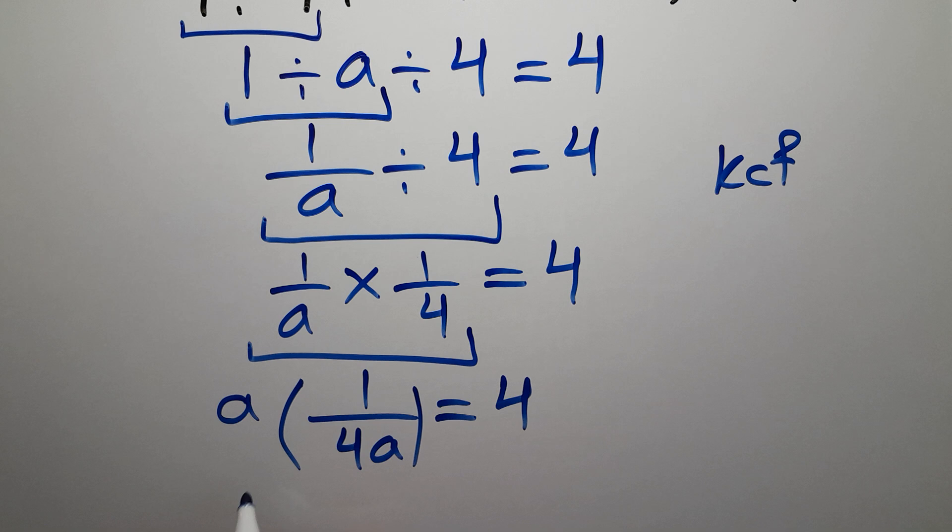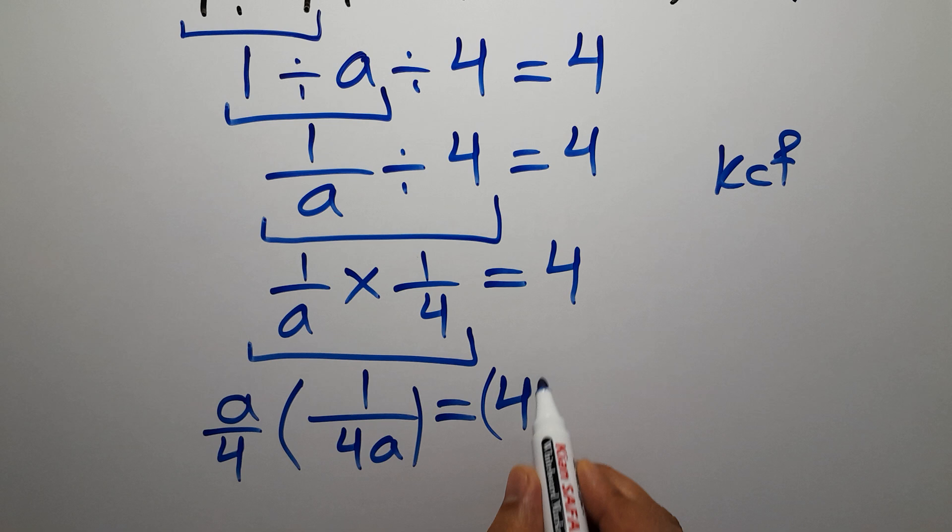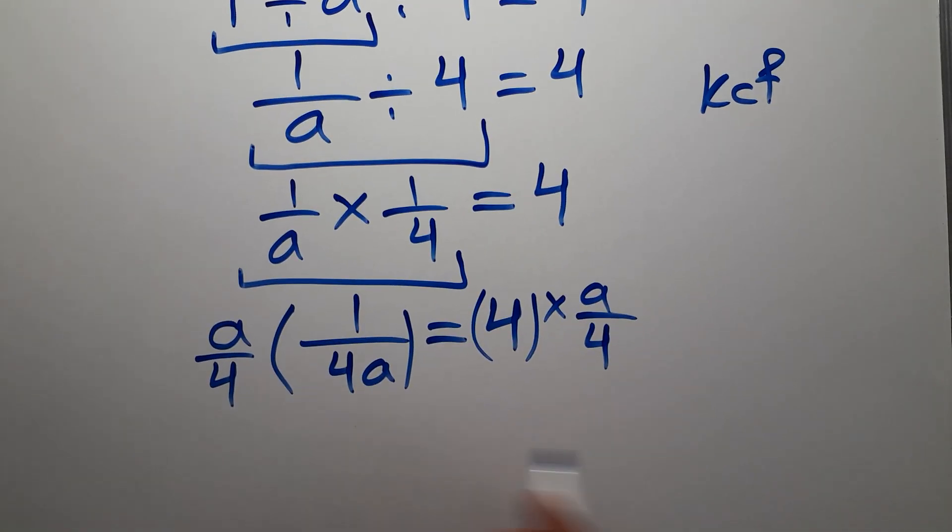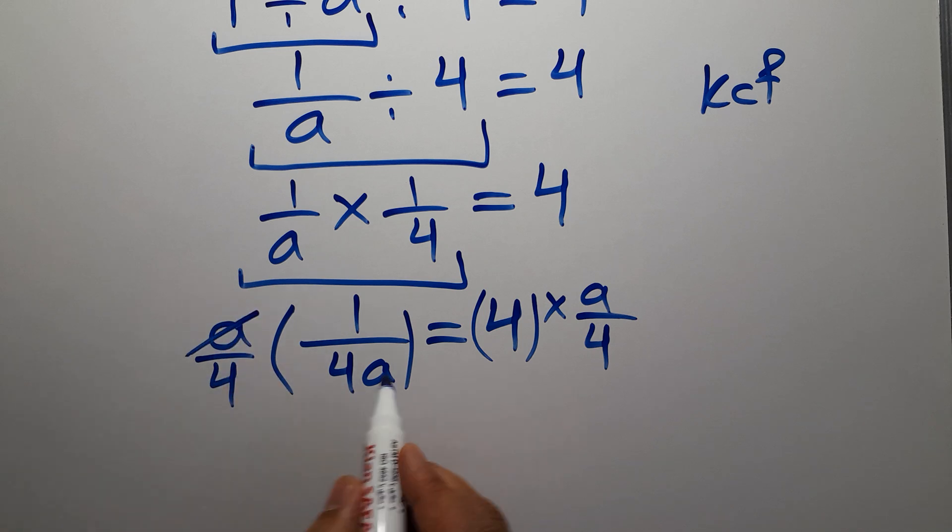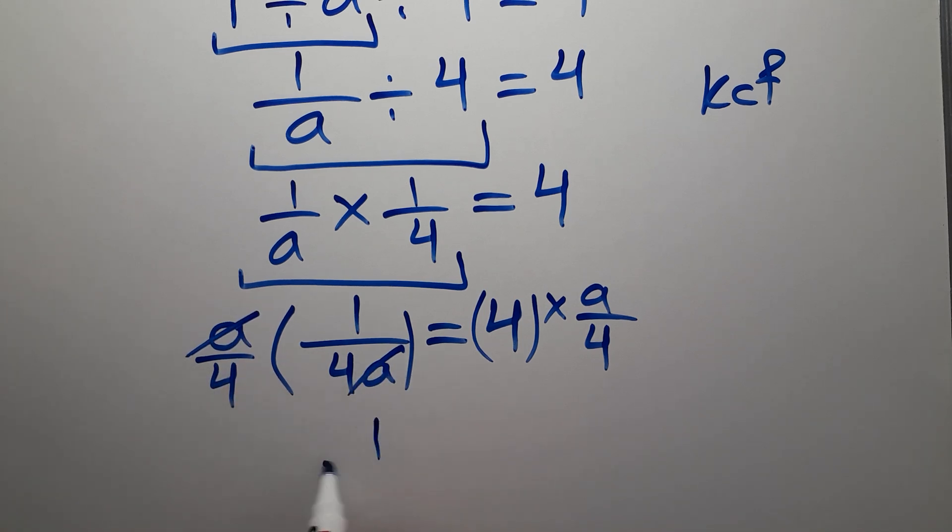Multiply both sides by a over 4. On the left hand side, this a and this a can cancel each other out, so we have 1 over 4 times 4, which equals 16.